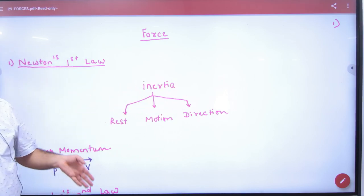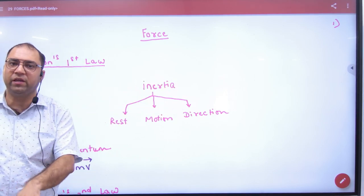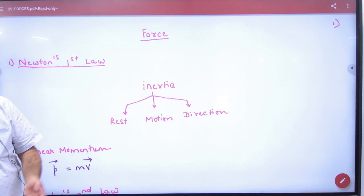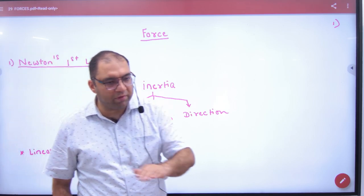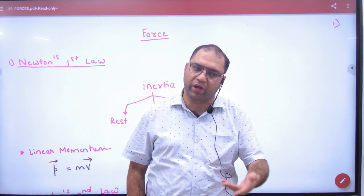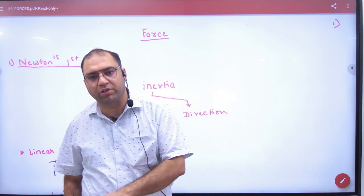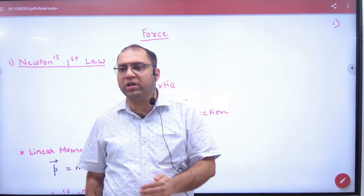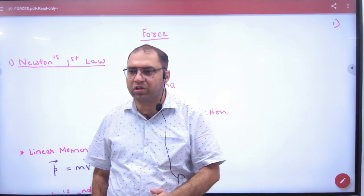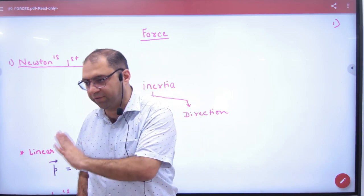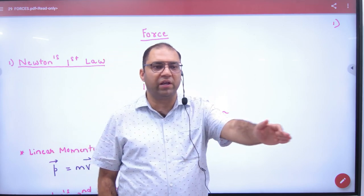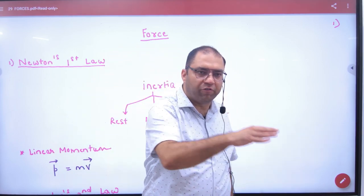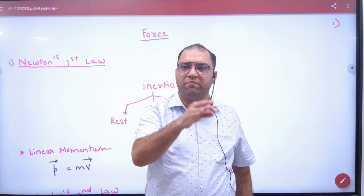The inertia of rest means that if a body is at rest, it will remain at rest unless force is applied. The inertia of motion means that if a body is in motion, it will remain in motion unless force acts on it. The inertia of direction means that any body will never change its own direction by itself — force is needed to change the direction.